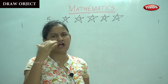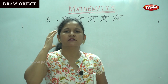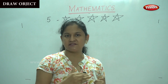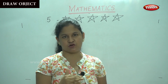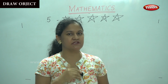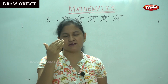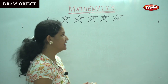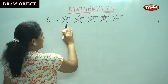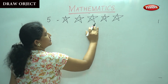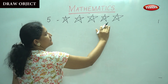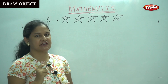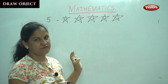I want you to count the objects that you are drawing as you are drawing, so that you will be able to understand. Shall we count the number of stars? 1, 2, 3, 4, 5 — we have drawn 5 stars for the number 5.